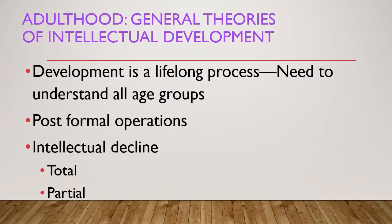Let us now look at general theories of intellectual development in the adult group. Development is a lifelong process, requiring us to understand all age groups. It includes post-formal operations and intellectual decline. Intellectual decline can be classified as either total decline or partial decline. Post-formal operations refer to various stage characterizations of behavior that are more complex than those found in Piaget's last stage, formal operations, and are generally seen only in adults.